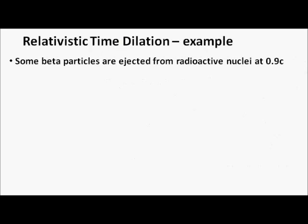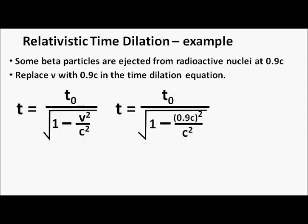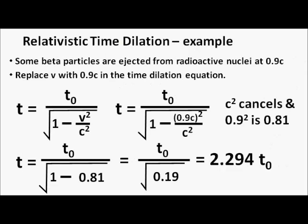Some beta particles move very quickly and are ejected from radioactive nuclei at 0.9 times the speed of light. In the time dilation equation, I'm going to replace v with 0.9c. The c squared terms cancel, and 0.9 squared equals 0.81.